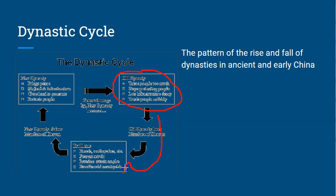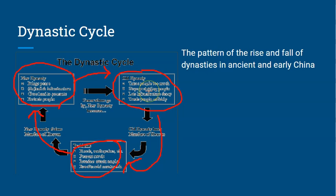But soon problems start to arise, and the gods take away the Mandate of Heaven from that dynasty. The gods then approve a new dynasty, which comes in and makes changes — but slowly that new dynasty turns into the old dynasty, and the cycle starts over again. It's a constant circle of rising and falling dynasties.